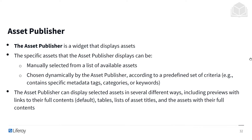The asset publisher can display selected assets in several different ways, including previews with links to the full content — this is the default — as well as tables, lists of the asset titles, or even the assets with their full contents. So it's very powerful for getting our assets in front of users.